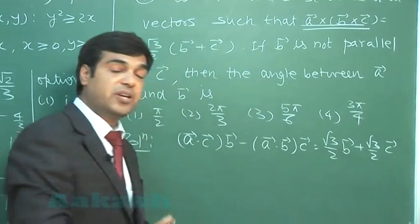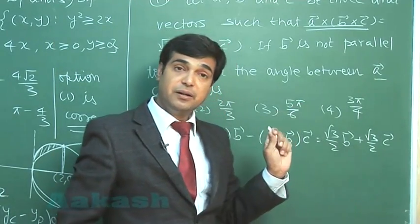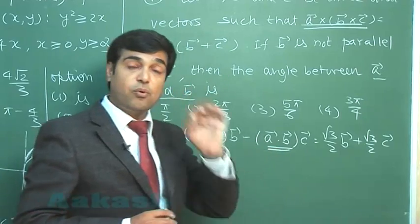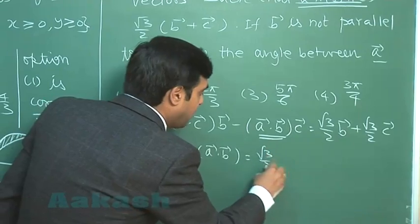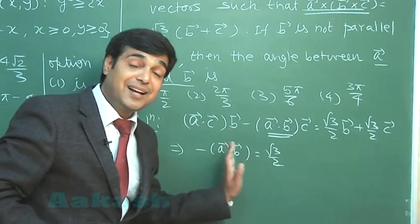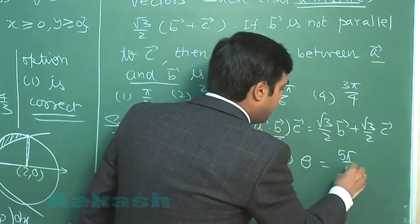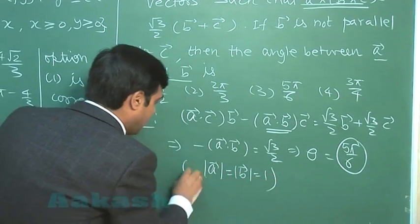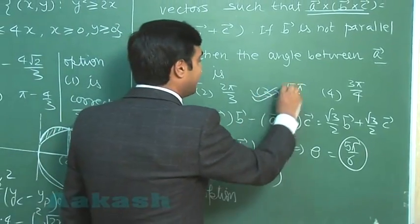This equals (√3/2)b plus (√3/2)c. Equating the coefficients of c vector on each side, we get minus a·b equals √3/2. Since a and b are unit vectors, minus cos θ equals √3/2, giving θ equals 5π/6. Option number 3 is the correct answer.